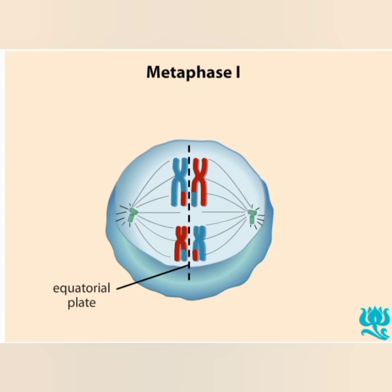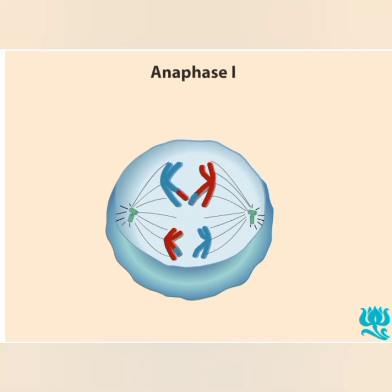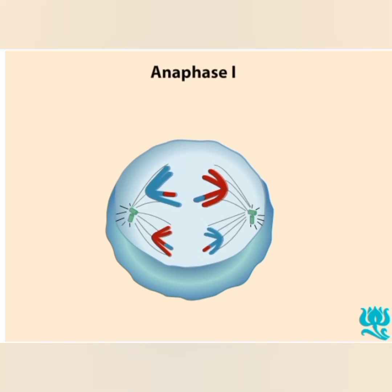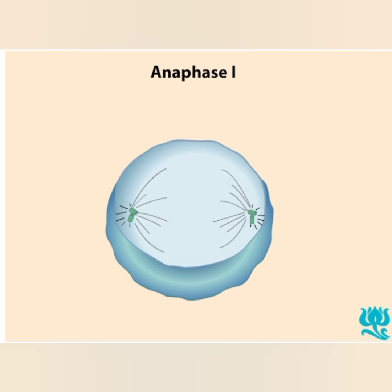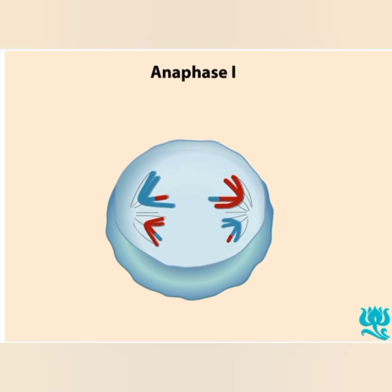Note that the chromosomes assort independently. For example, the maternal chromosomes align randomly, not necessarily on the same side of the plate. During anaphase 1, chromosomes from each pair move to opposite poles of the cell. The centromeres of the chromosomes do not divide, so each chromosome still consists of two sister chromatids, which now may not be genetically identical due to crossing over.